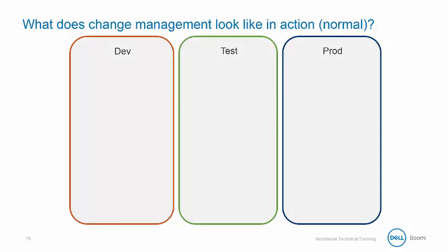So what does change management look like in action? We'll examine what we refer to as normal mode, meaning we are not rolling back our data. Assume we have developed a process and we are satisfied in the build tab, which will represent development in this scenario. We deploy it to the test environment using our test connectors, and now we have test deployment version 1, revision 1.